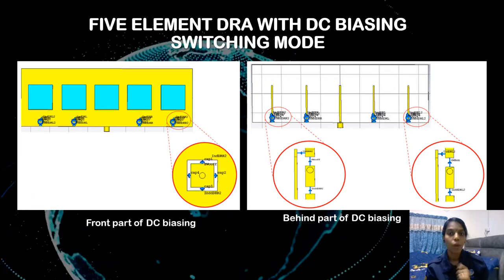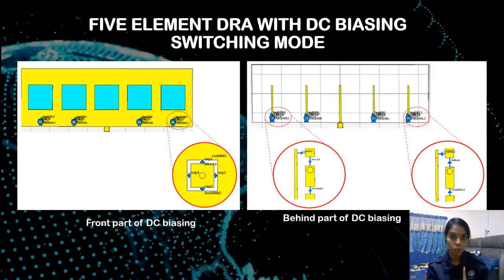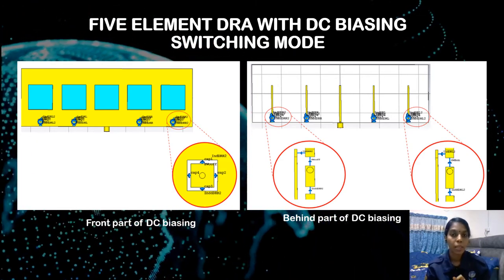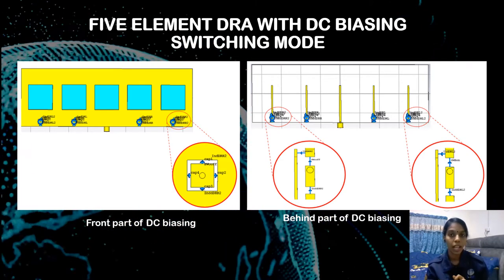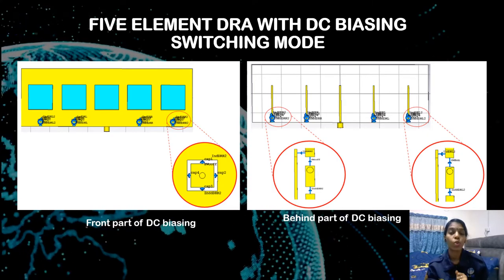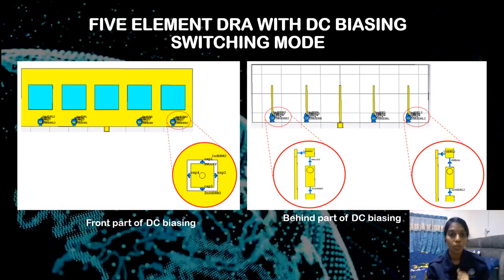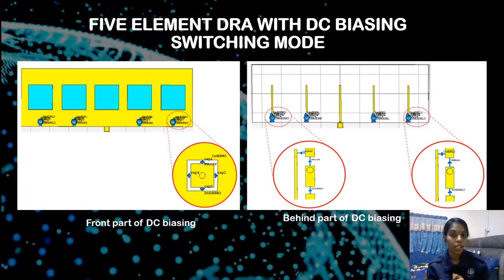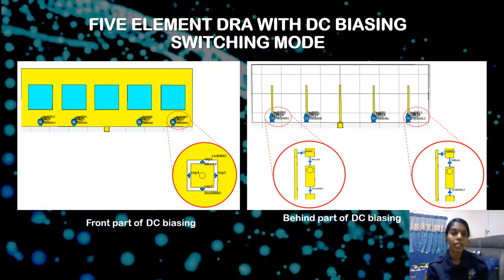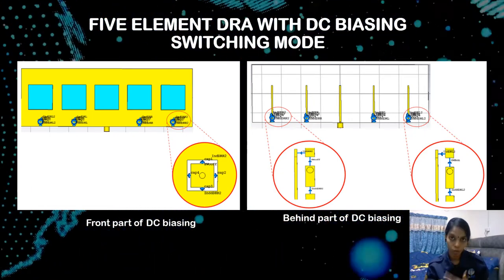The resistor values of 4.7 and 6 ohms are used for ON mode, and capacitor values of 0.017 pF and 0.0297 pF are used for OFF mode, for different types of PIN diodes which are categorized as HP and D and BAR PIN diodes.